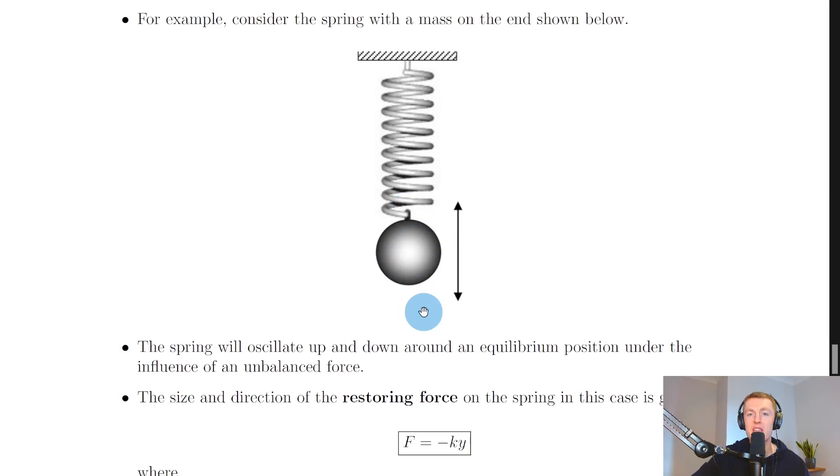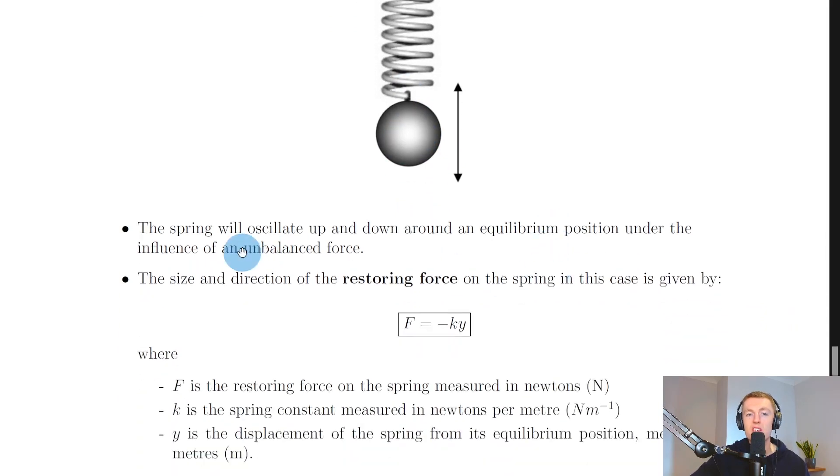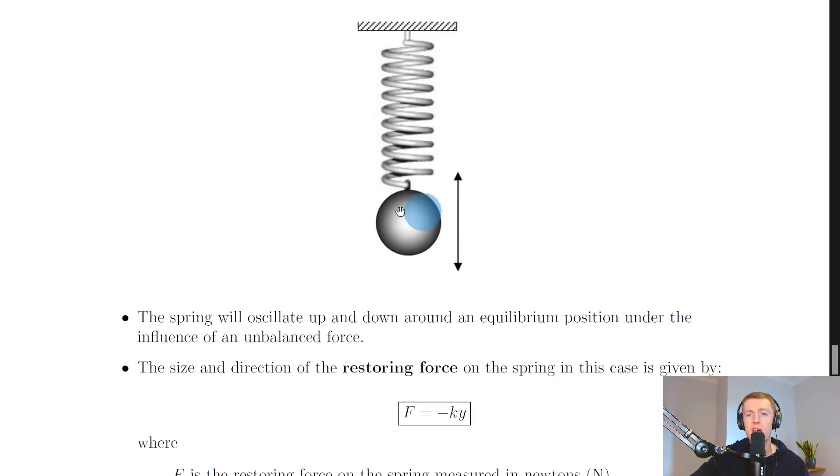The spring will oscillate up and down around an equilibrium position under the influence of an unbalanced force. So if you apply an unbalanced force downwards on this mass by pulling it down and then you let it go, the ball is going to oscillate up and down.